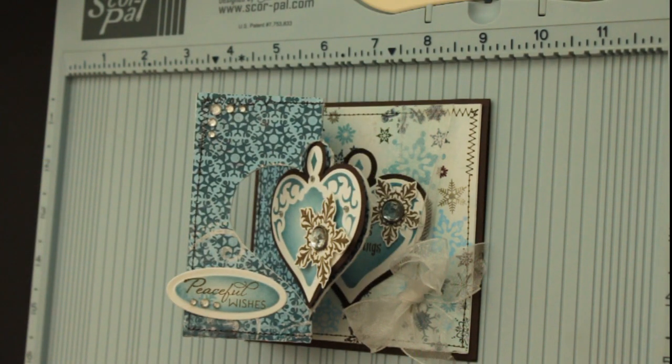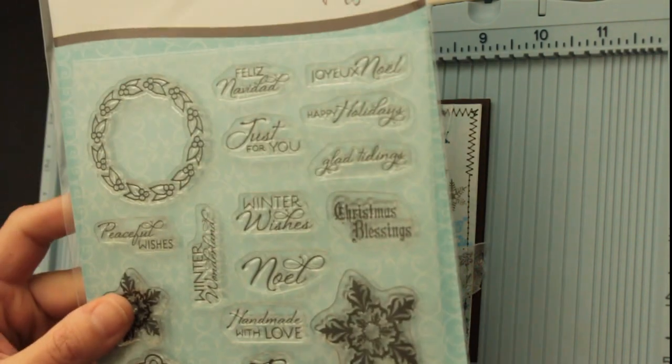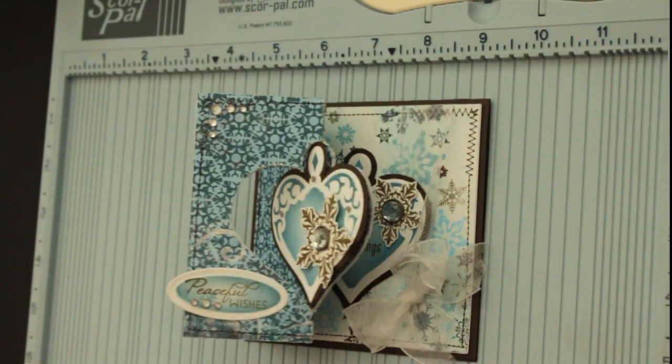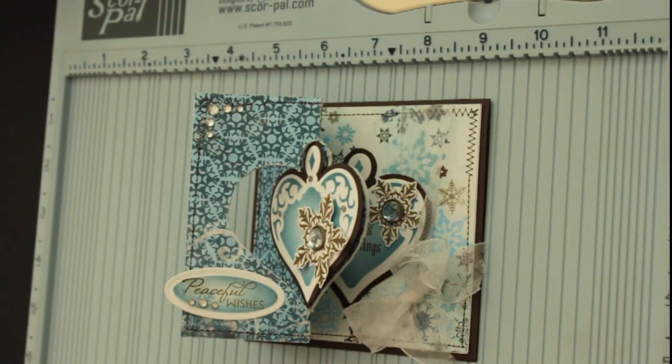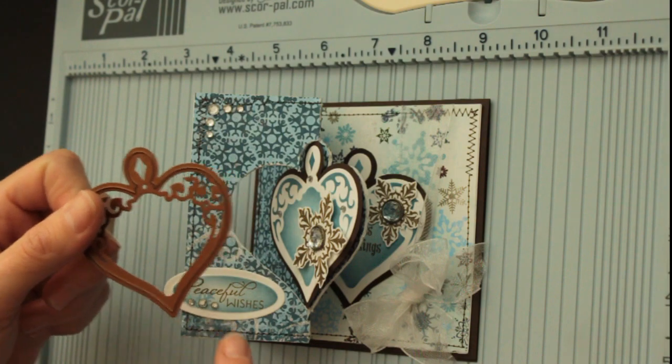For my sample, I used Verve's Glad Tidings stamp set, Bo Bunny paper, and one of the nested heart shapes from Spellbinders.